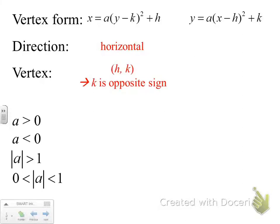Notice that we'll use k as the opposite sign because it's the only thing coming out of a parenthesis. If the a value is greater than 0, meaning it's positive, that means our parabola will open to the right. If the a value is negative, that's less than 0, then our parabola will open to the left.